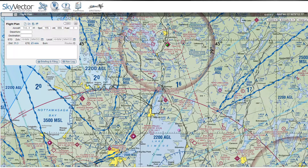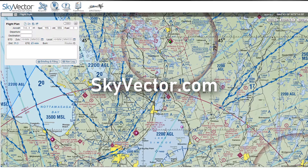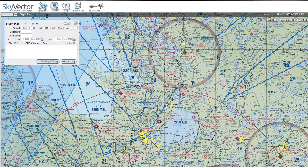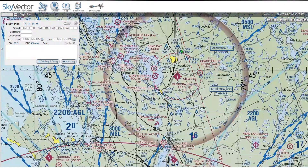First things first, you go to skyvector.com to get onto this website. I personally love this website for online and for flight simming — I just think it's great. It has all the info there. It shows you any turbulence that's around, any weather that's around as well if you have the weather layer turned on. First things first, we're going to find our airport — that's going to be Muskoka, C-Y-Q-A.